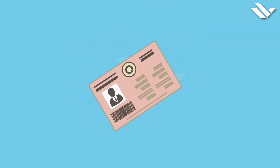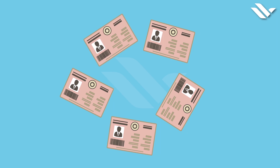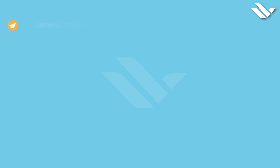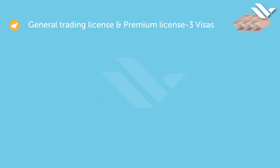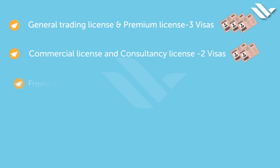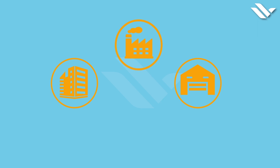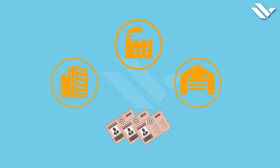Now let's look at the visa provisions. There are absolutely no restrictions on the number of visas. Visa eligibility depends on the activity and facility. For the premium office package: General trading license and premium license — three visas. Commercial license and consultancy license — two visas. Freelancer permit — one visa. Micro business — no visa eligibility. For other facilities like executive offices, warehouses, industrial units, etc., there are no limits for visa issuance.